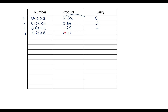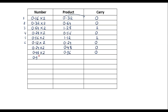Write 0 as the carry. Now 0.56 multiplied by 2 gives 1.12 — write 1 here. This is the fifth time. Take the fraction part: 0.12 multiplied by 2 gives 0.24 — write 0. Then 0.24 multiplied by 2 gives 0.48 — write 0. Now 0.48 multiplied by 2 gives 0.96 — write 0.